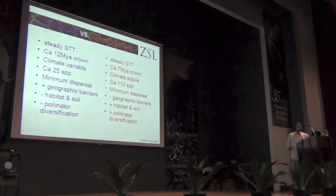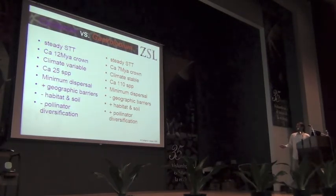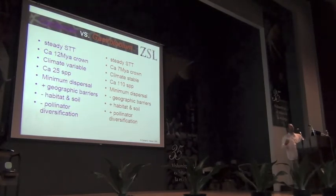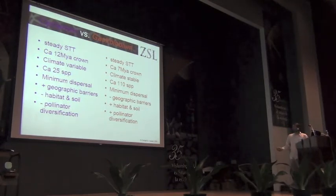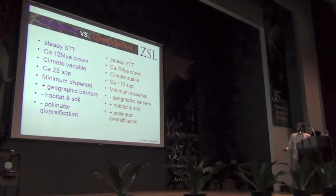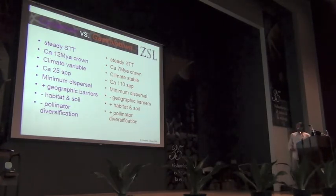We can summarise our findings for cyclamen and Gastrolobium. For Gastrolobium, the climate is the background against which a steady state diversification happened, probably triggered by habitat and soil preferences. Whereas for cyclamen, geographic barriers were really important drivers of speciation.